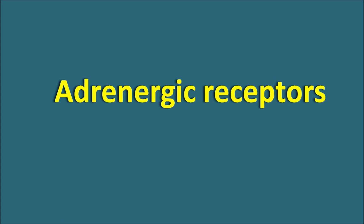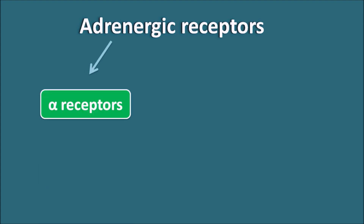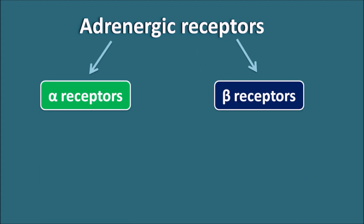Hi everyone. Today in this video let us discuss about the adrenergic receptors. What are the different types of adrenergic receptors? These adrenergic receptors can be classified into two types: alpha receptors and beta receptors.